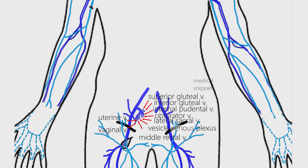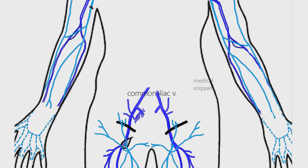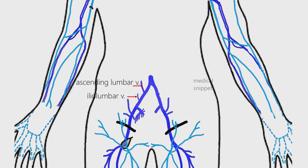The common iliac veins join to form the inferior vena cava in front of the body of the L5 vertebra. The tributaries of the common iliac veins are iliolumbar vein and ascending lumbar veins. The median sacral vein drains into the left common iliac vein, or sometimes into the angle of junction of the two common iliac veins.